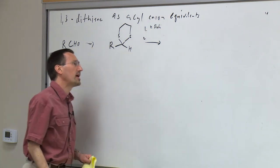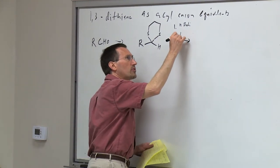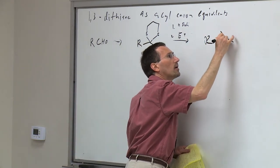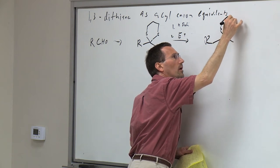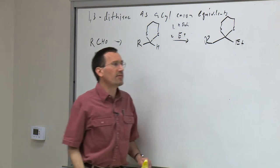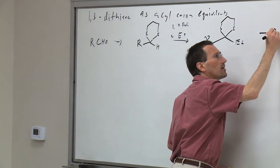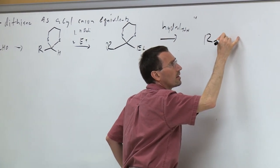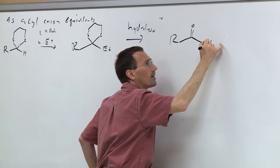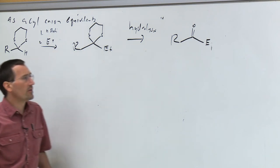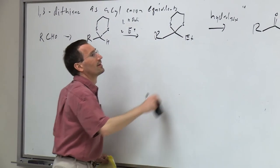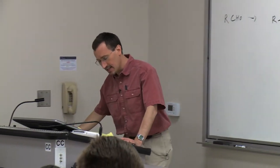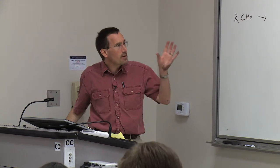If you treat the dithiane with butyl lithium and then treat with an electrophile—E+—you react the electrophile and form a bond. Then if you subject this to hydrolysis, you've formed your new bond. That's the basic idea: hide your carbonyl as the 1,3-dithiane, metalate, react with an electrophile, then hydrolyze the dithiane to reveal the carbonyl.